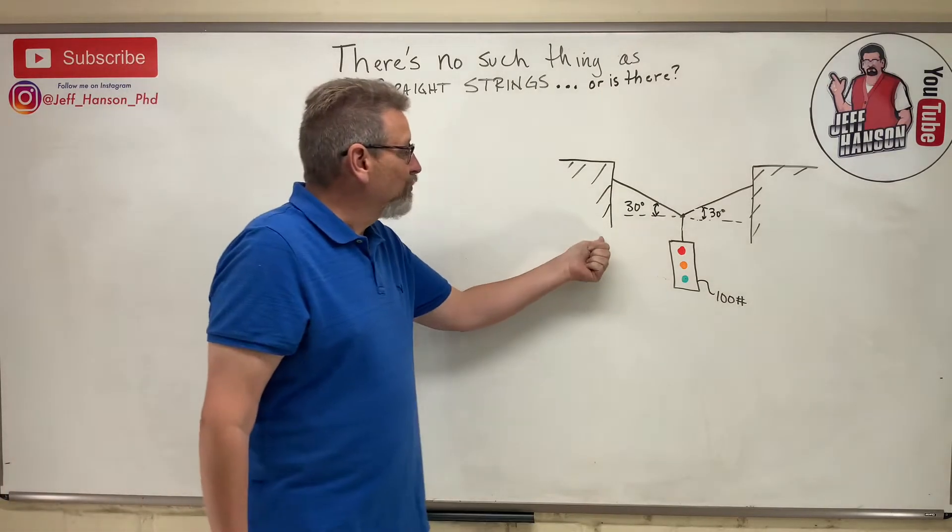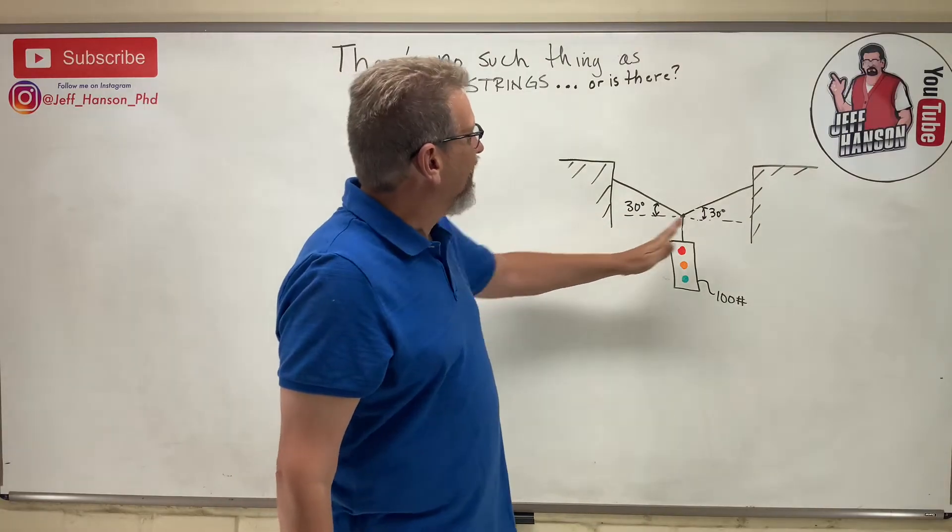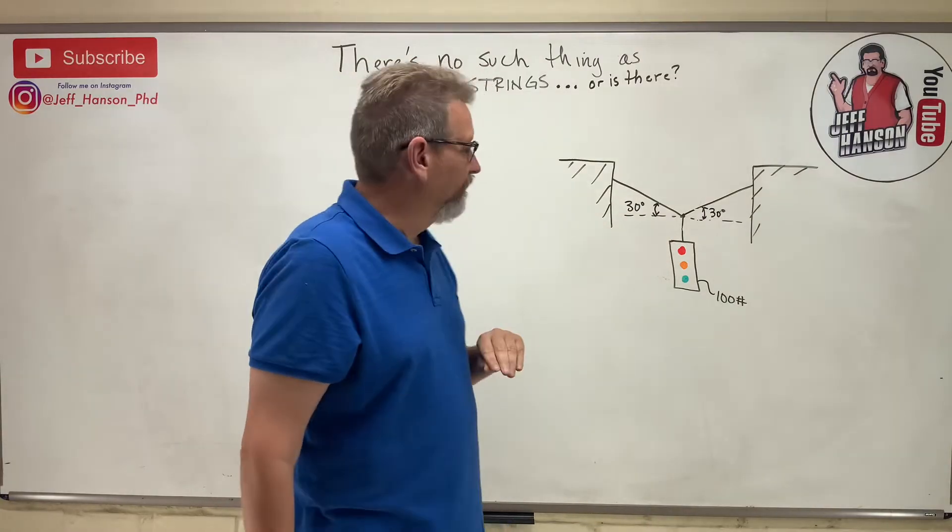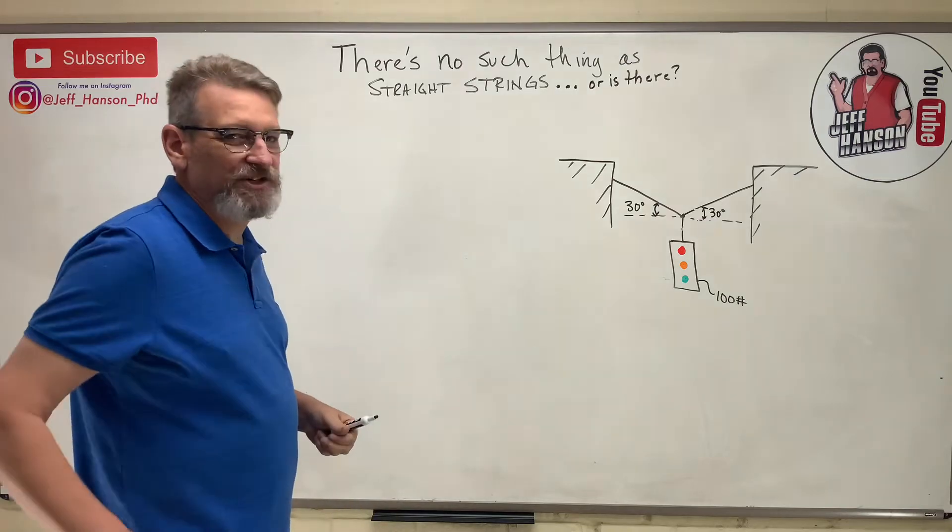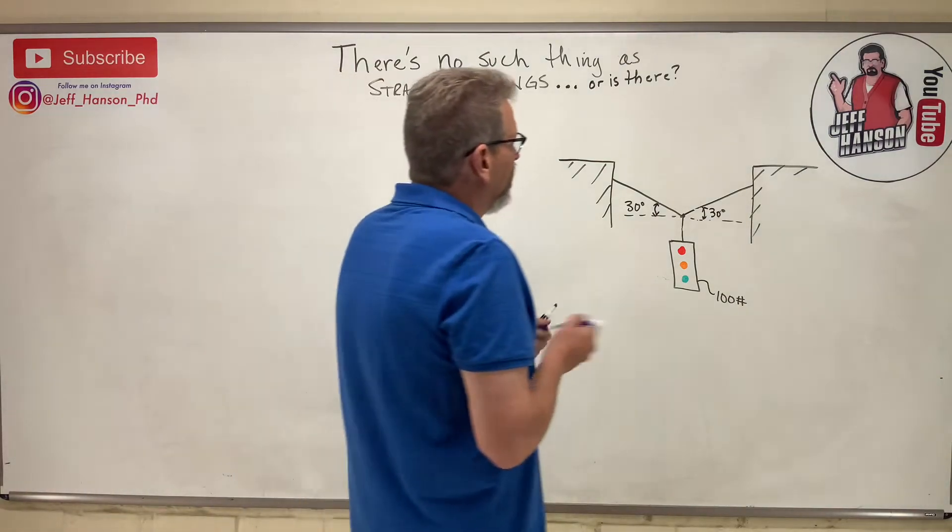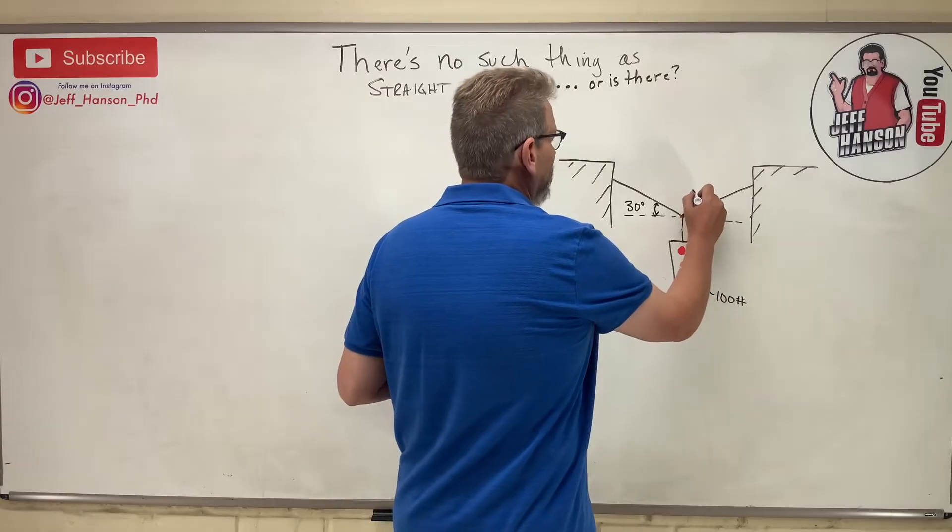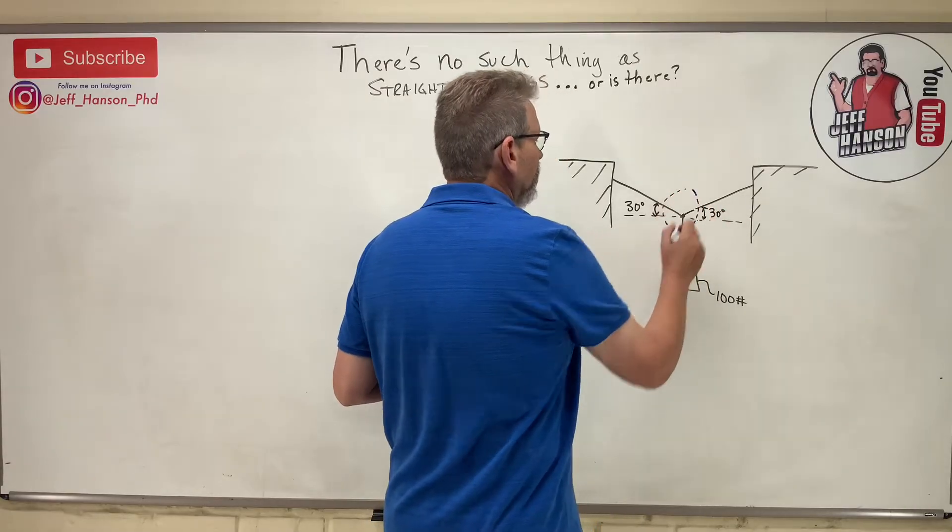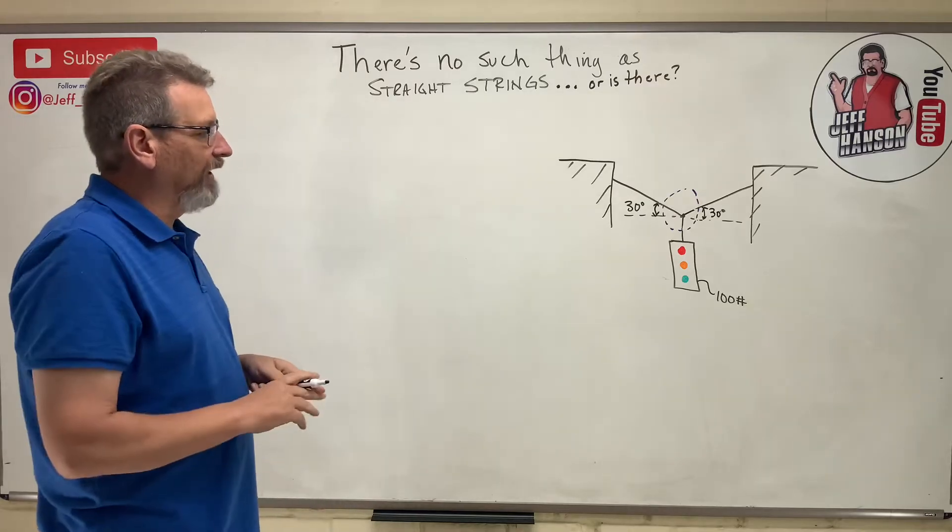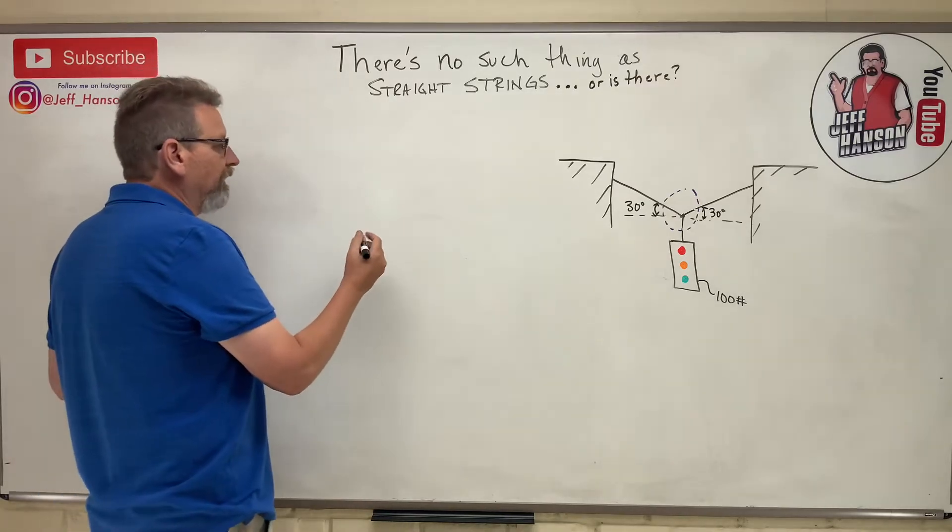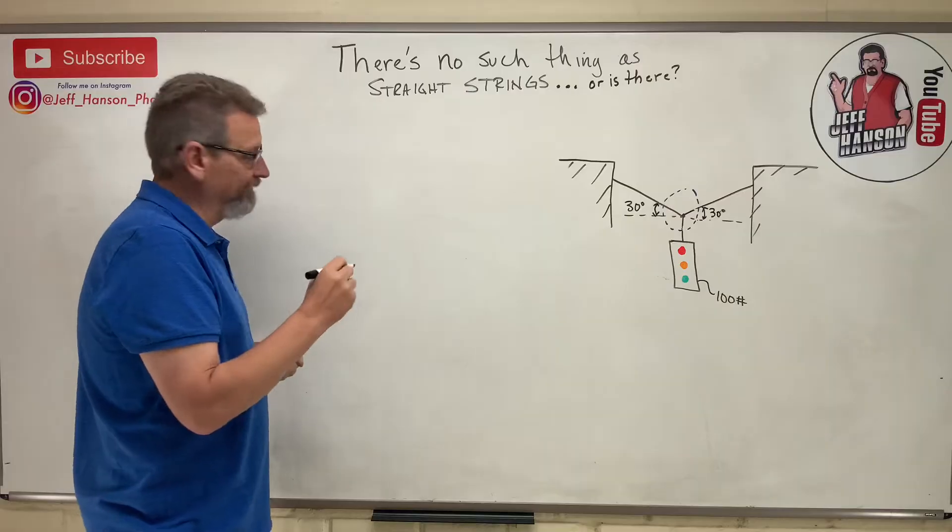I've got a traffic light hanging between two buildings. To solve this problem I want to know what the tension in those cables are. The first thing I need to do is look at this intersection of the ropes there. I have a hundred pound traffic light hanging there, an expertly drawn traffic light if I might add.